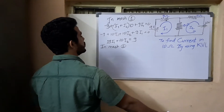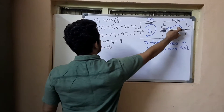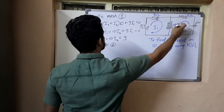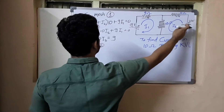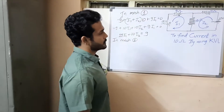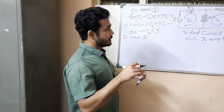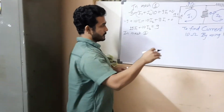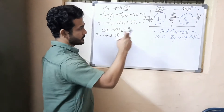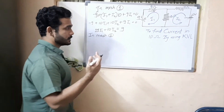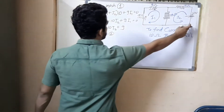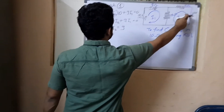In mesh 2, I2 is flowing in a decided direction from the positive plate to the negative plate of the battery. Since we are tracing the circuit opposite to the direction of I2, there will be a voltage drop at the battery side and a voltage gain — positive sign — for the resistances.